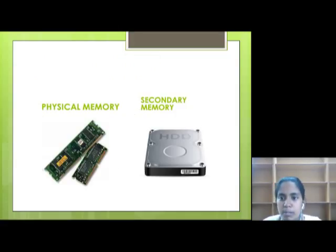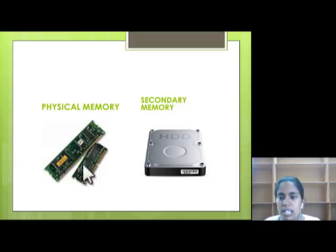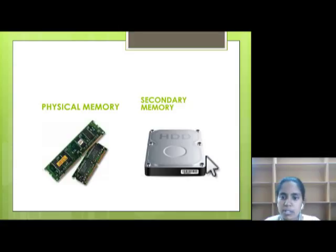This is an example of physical memory and secondary memory. Physical memory is the memory which we can see. This is the type of RAM and this is the type of secondary memory, that is floppy disk and hard disk, which we can see.